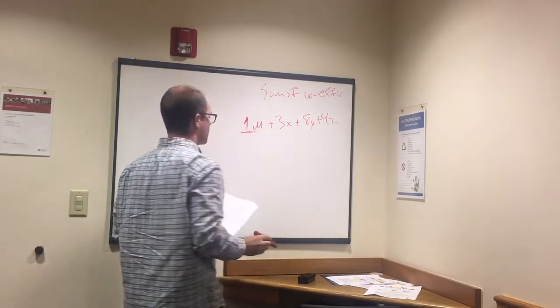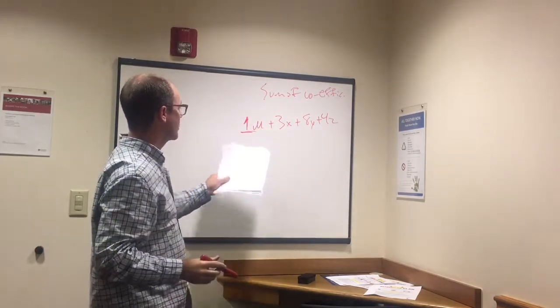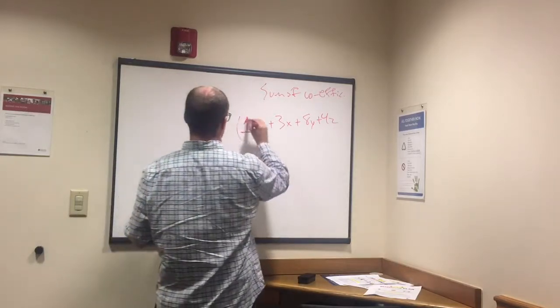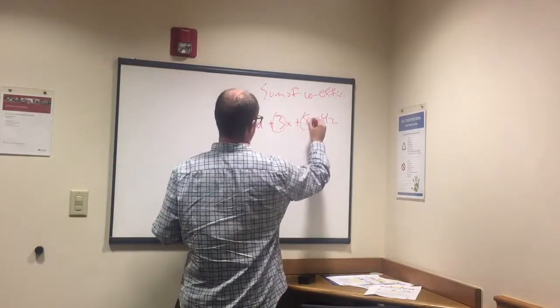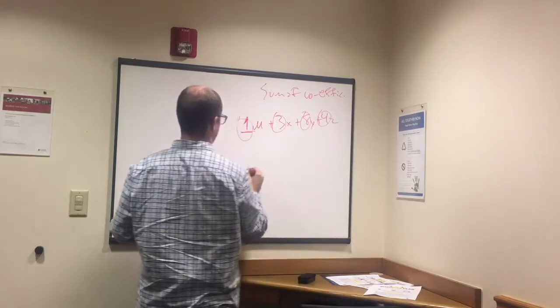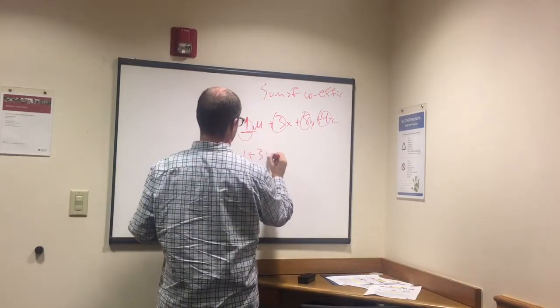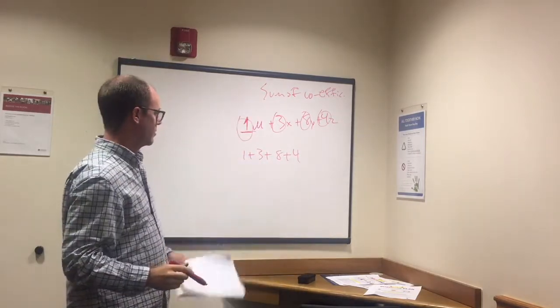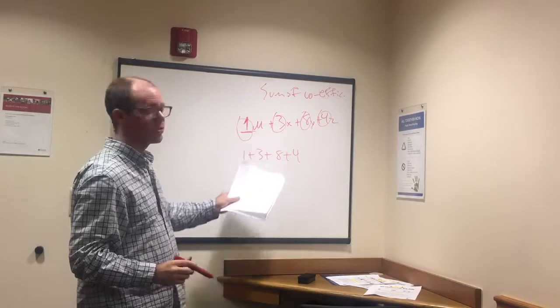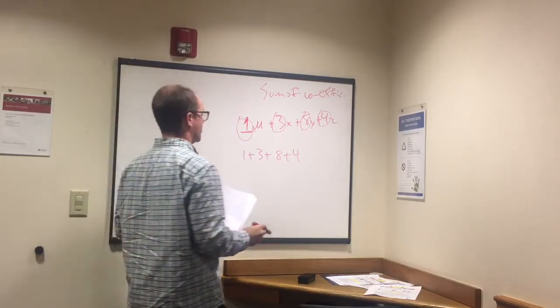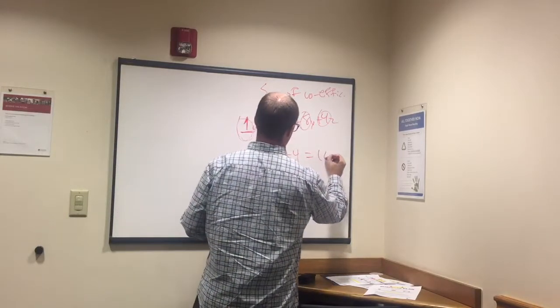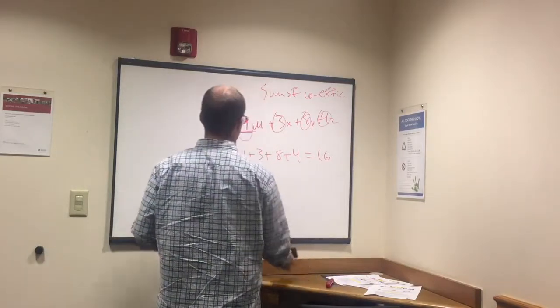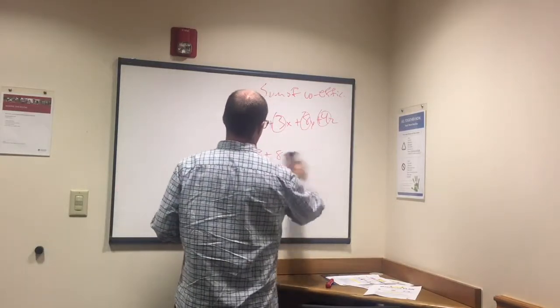So we have a 1, a 3, 8, and a 4. One plus 3 plus 4 plus 3 is 4, 4 plus 8 is 12, 12 plus 4 is 16. So the sum of the coefficients for that problem is 16.